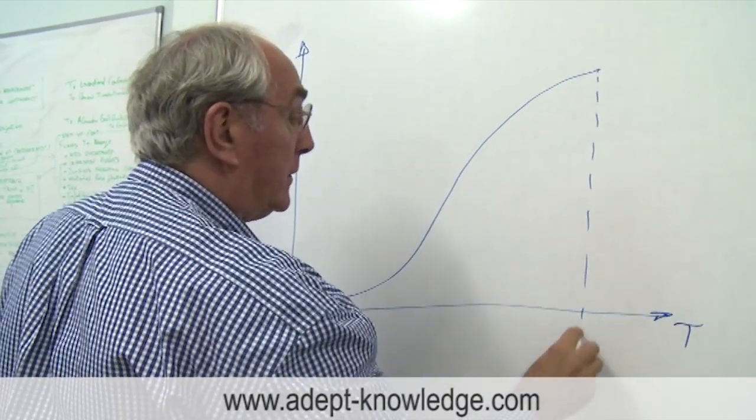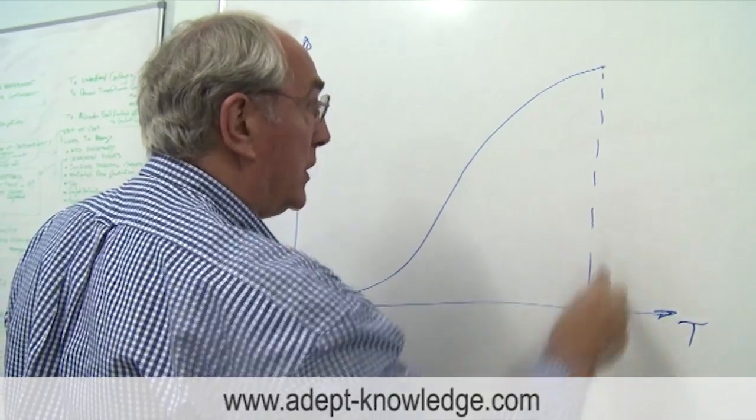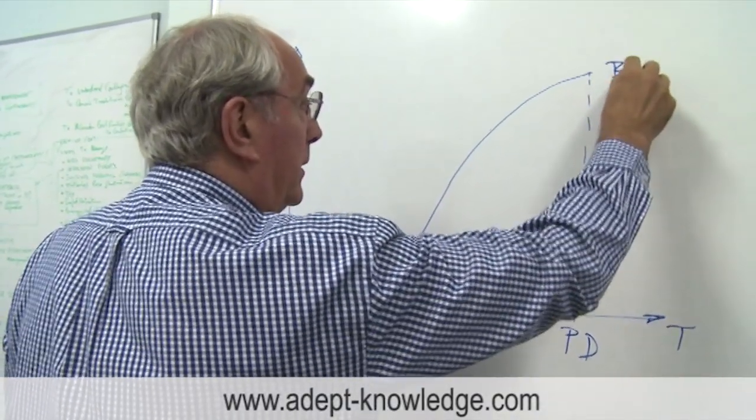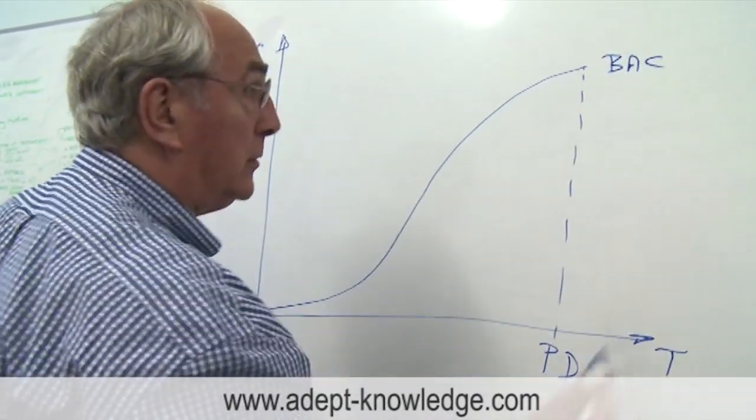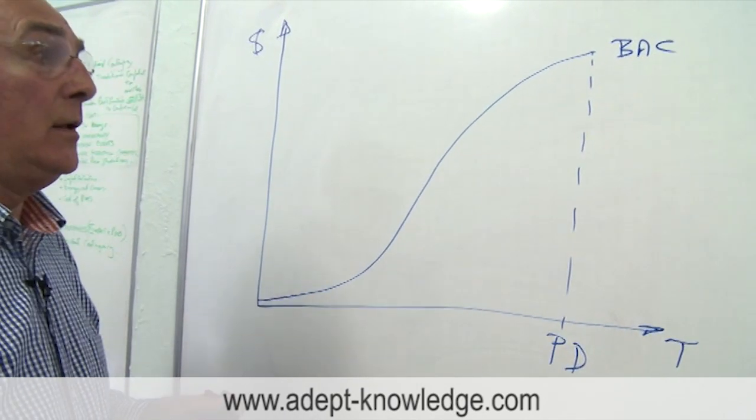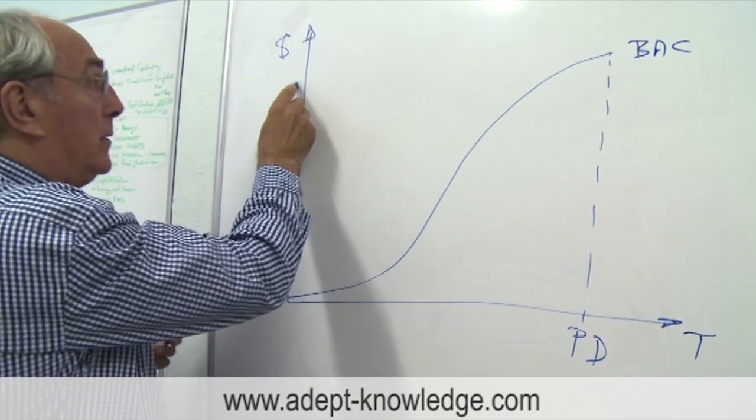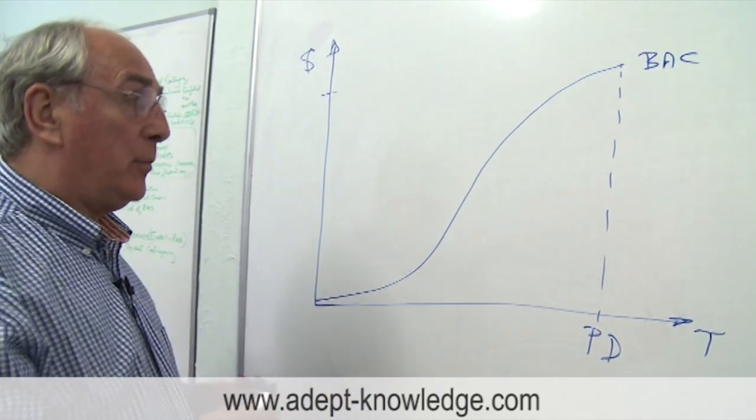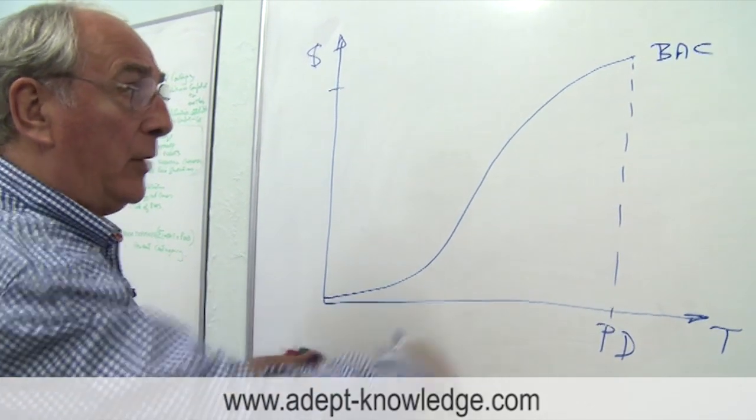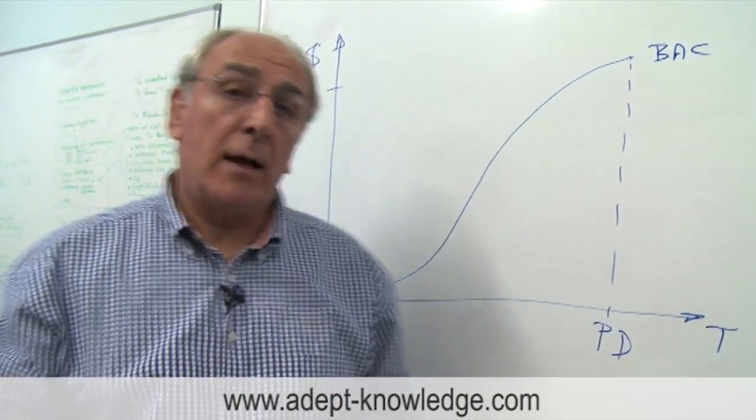And that's telling us this is the end of the project, the project duration. This is the planned budget at completion. Notice that, BAC. So this is where we see the baseline of the project. We're going to do all the work, we're going to spend all this amount of money over that time.